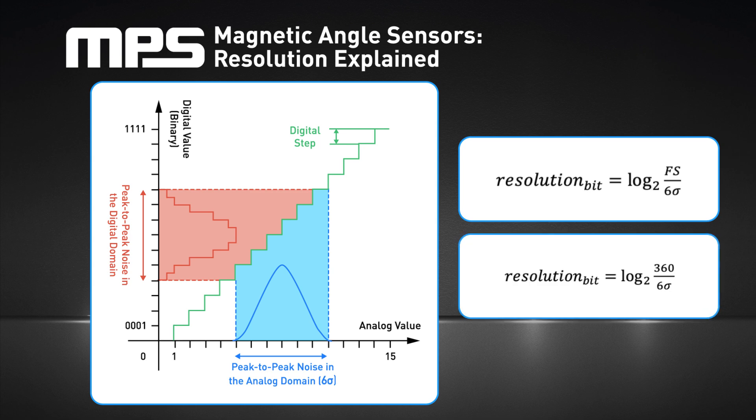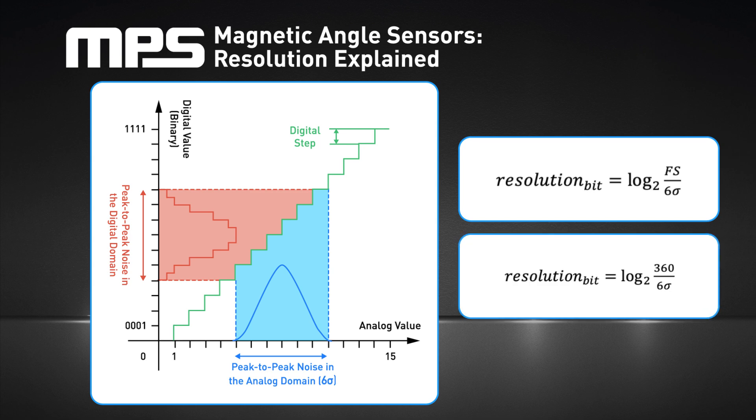When providing a measurement in a digital format, the resolution can also be expressed in bits. In the case of angle measurements, the full scale equals 360 degrees, which means the resolution can be estimated with equation 2.